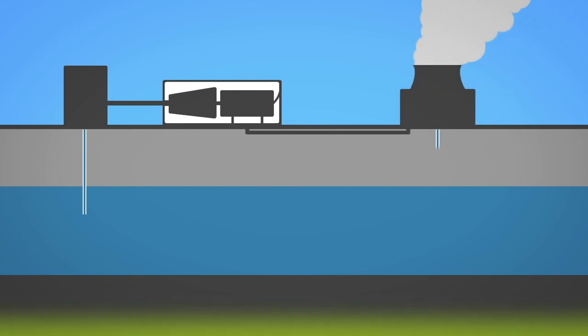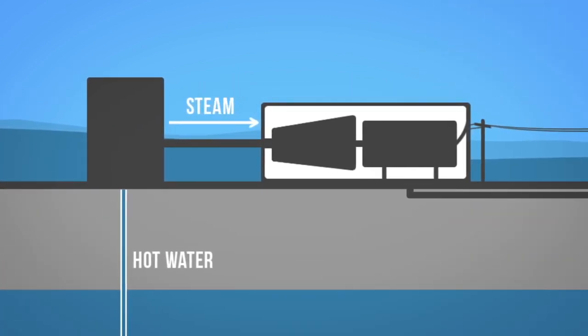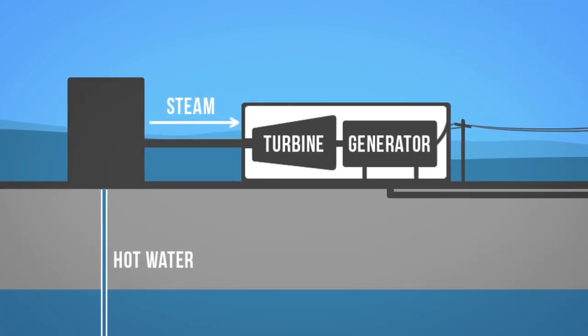Geothermal heat can also be used to produce electricity in a geothermal power plant. Electricity is generated when geothermal heat produces steam that turns turbines on a generator.